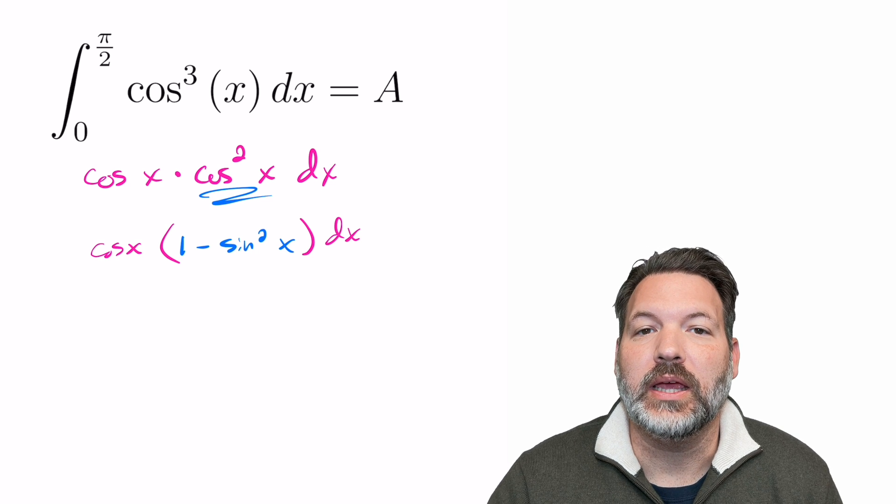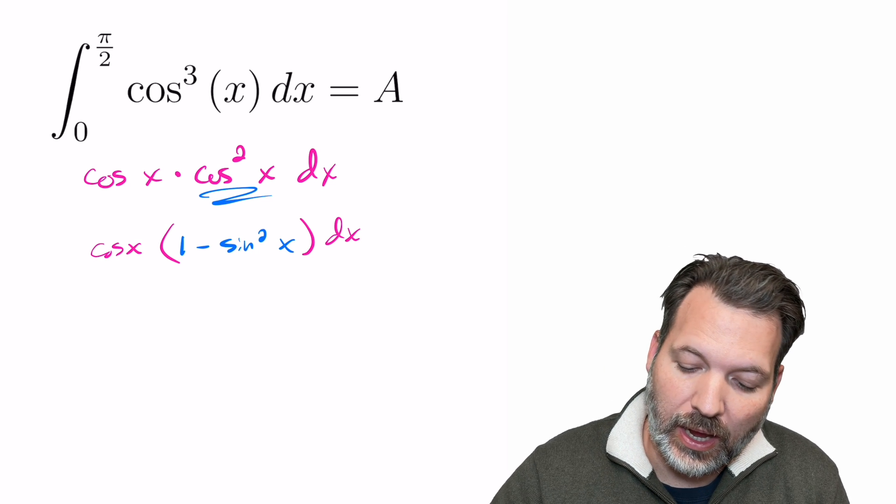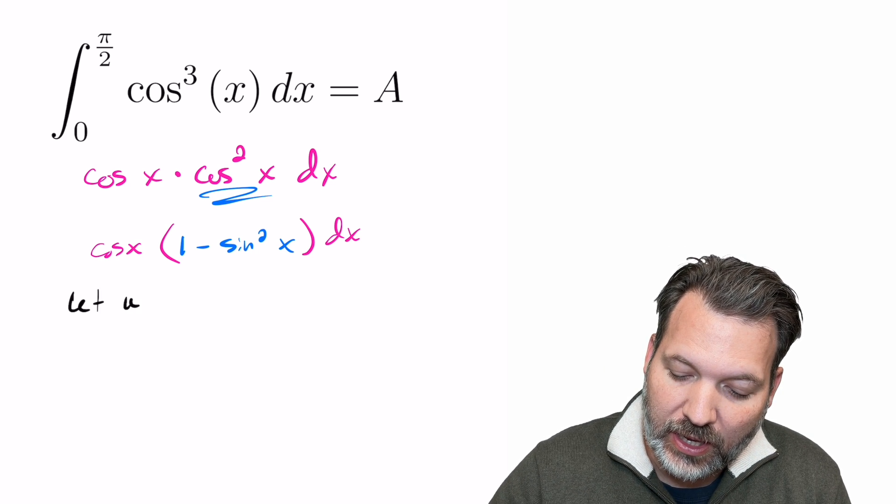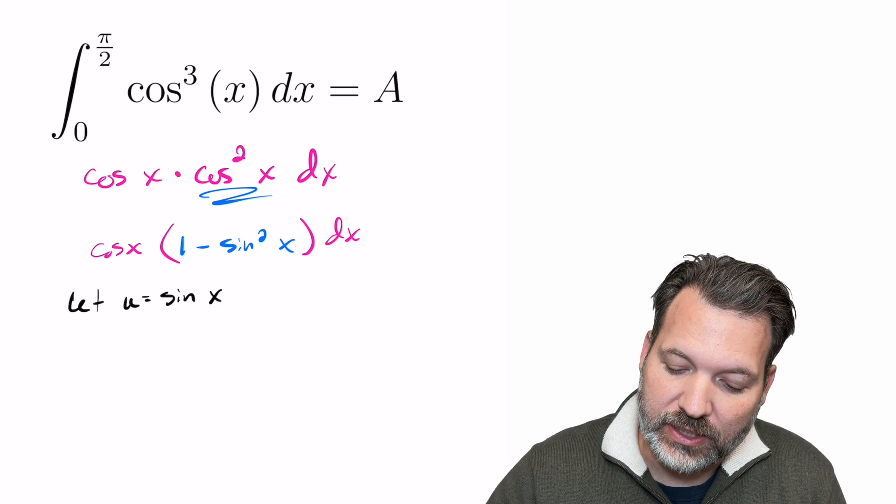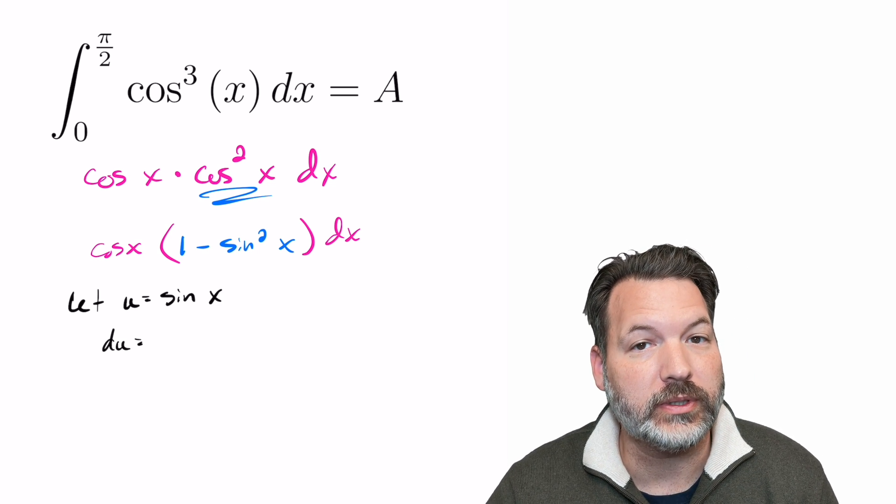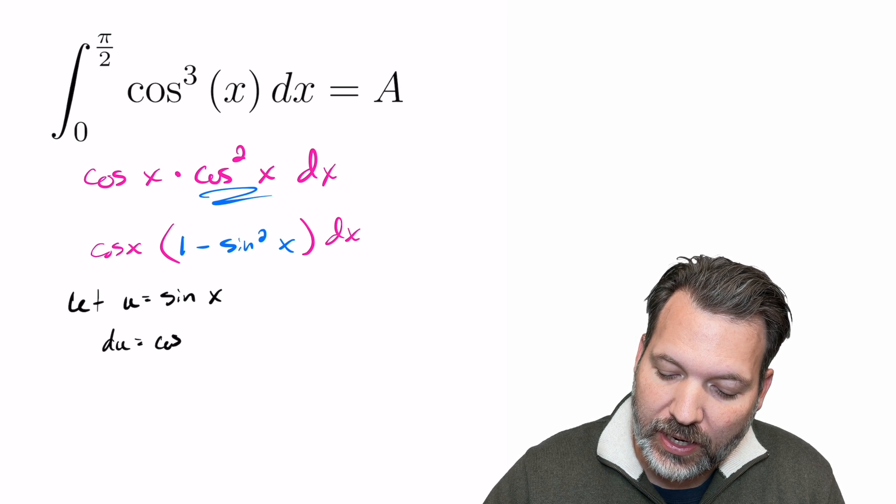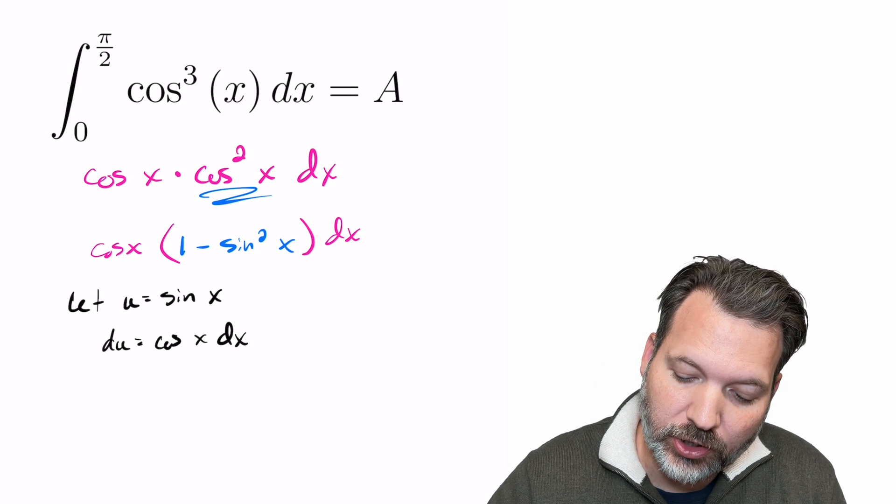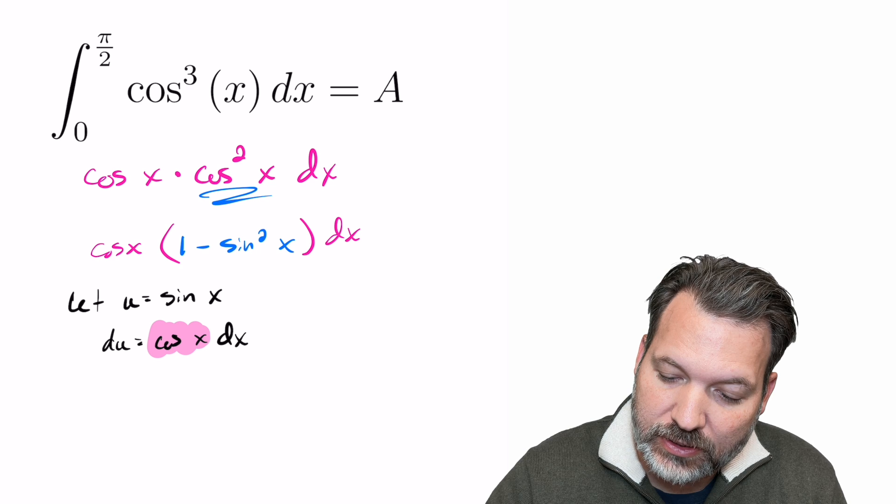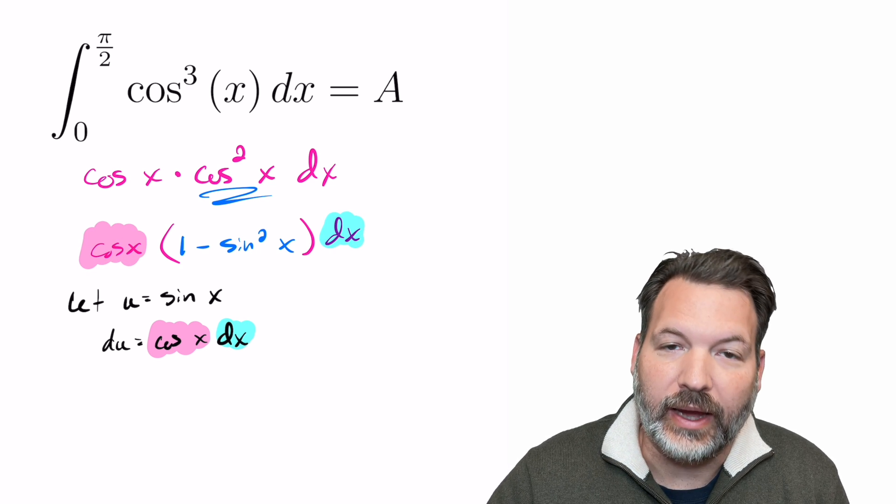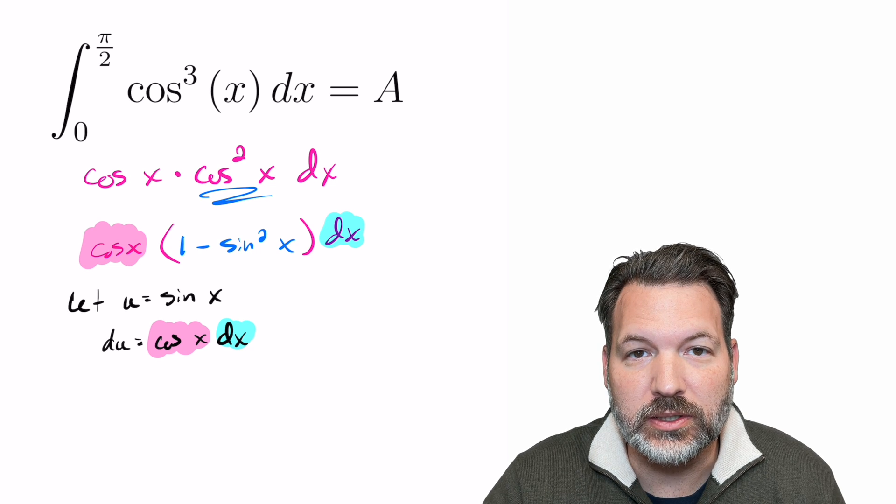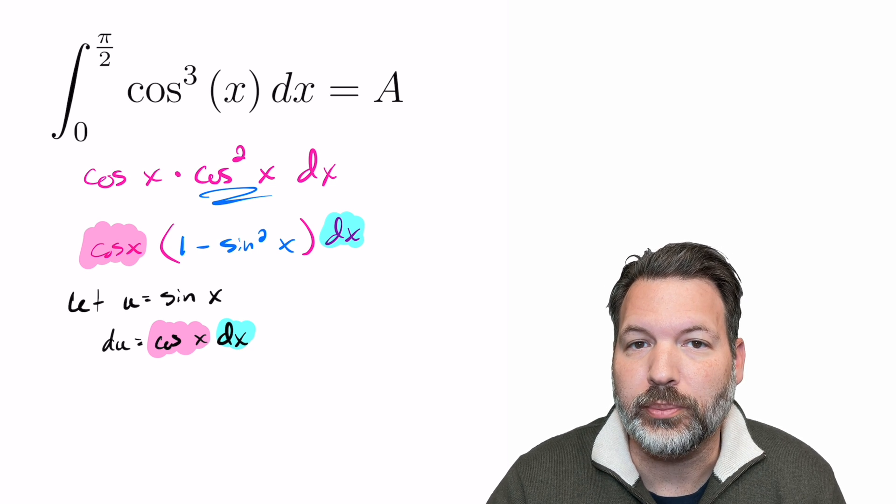What this gets me is that now I can implement U substitution. I am going to substitute an intermediate variable and let it stand for sine x. When I take the derivative of that variable, du, I get cosine x dx. And that's good because cosine x dx is in my integral right now. And so that's going to let me rewrite this integrand in a much simpler fashion.